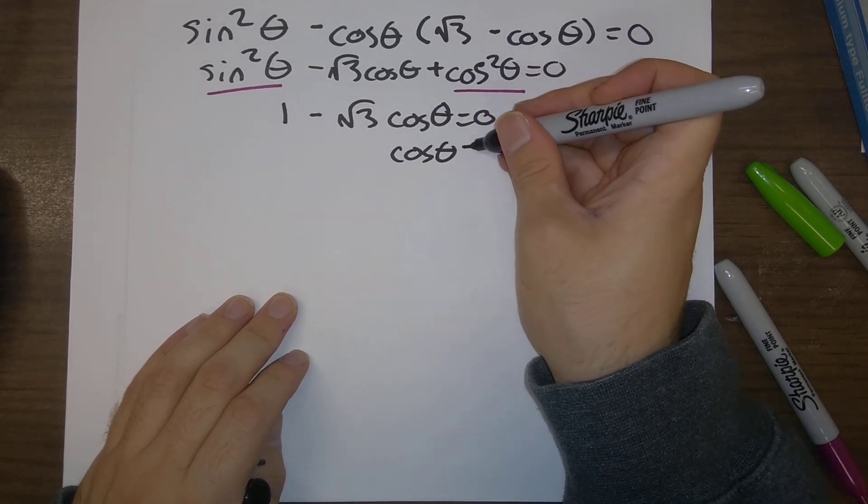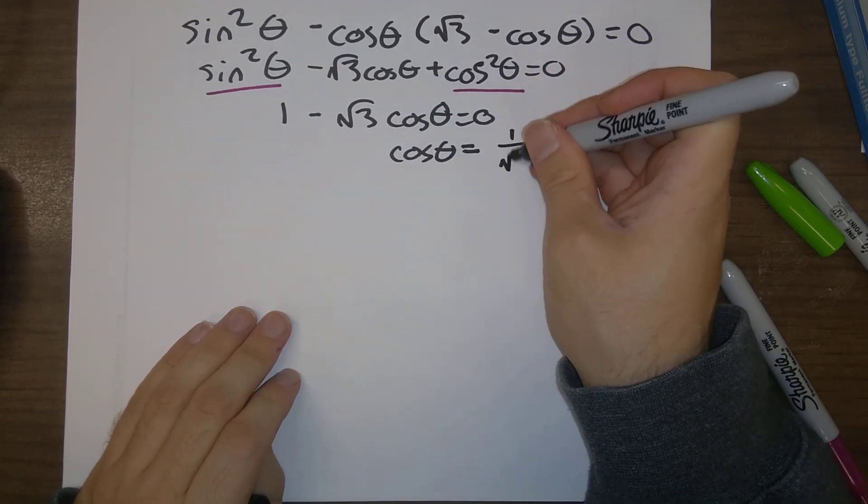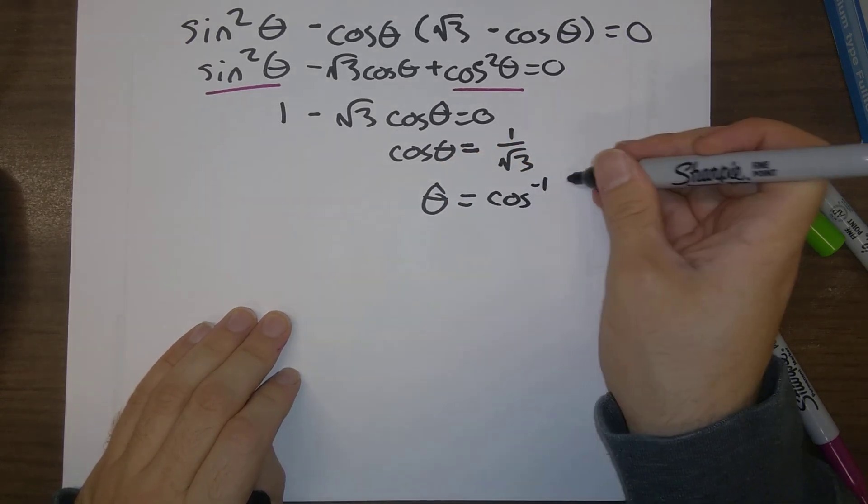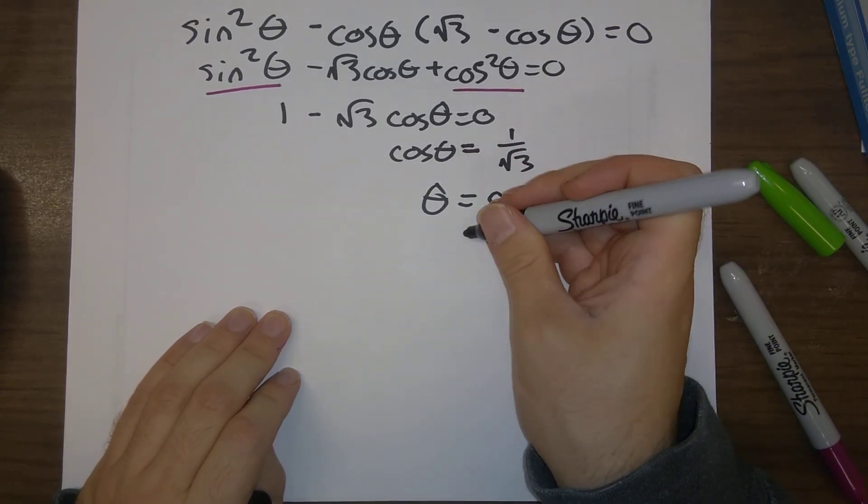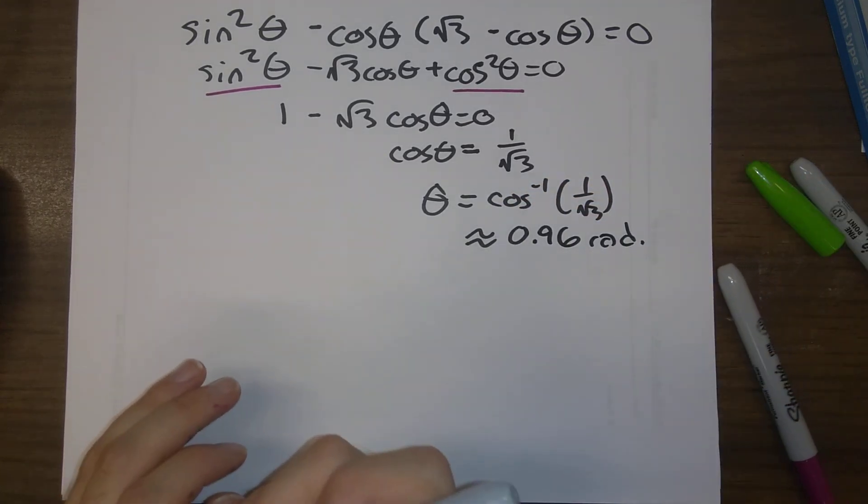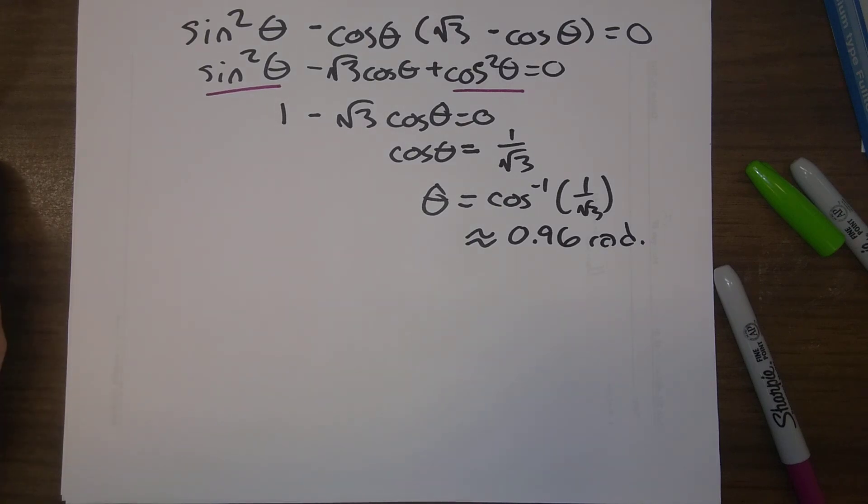Cosine theta would equal one divided by root three. So theta would be the inverse cosine of one over root three. And that's where we're getting the 0.96 radians from. So my apologies for glossing that over in the previous video.